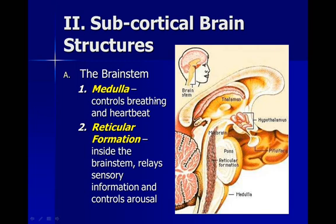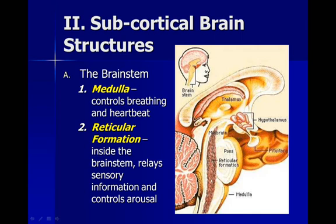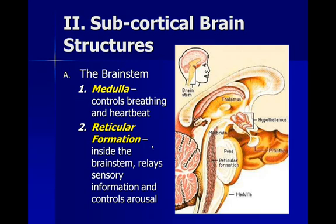A lot of painkillers reduce respirations, which is what can be dangerous. Most people that overdose do so because they stop breathing. The reticular formation lies within the middle of the brainstem and relays sensory information and controls our arousal. The sympathetic nervous system we talked about previously would be part of the reticular formation.